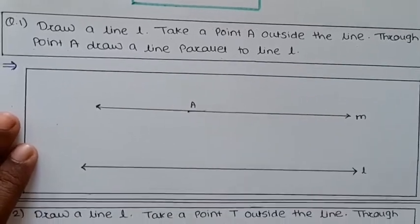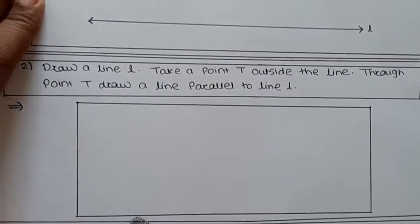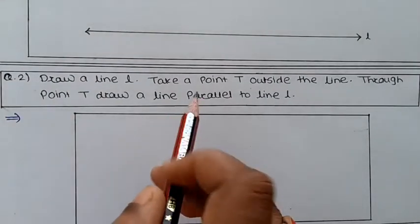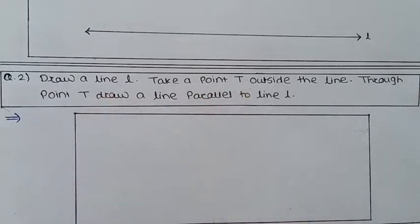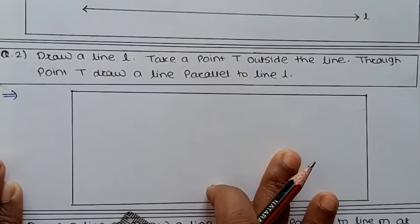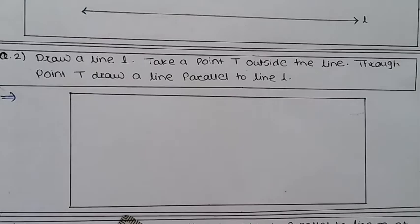Now question number two — a similar type of question: draw a line L, take a point T outside the line, and through point T draw a line parallel to line L.